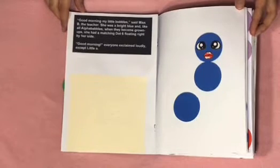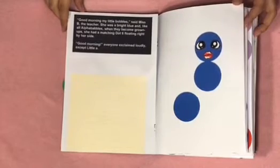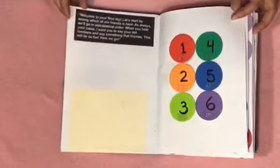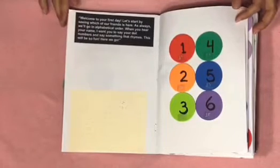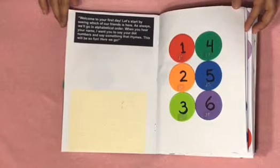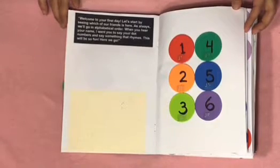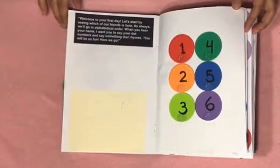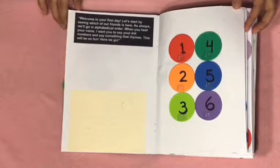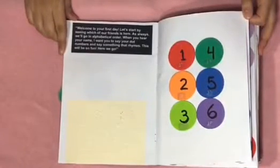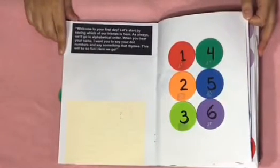Here we have Miss B standing in front of the class. Welcome to your first day. Let's start by seeing which of our friends is here. As always we'll go in alphabetical order. When you hear your name I want you to say your dot numbers and say something that rhymes. This will be so fun. Here we go. Here we have the six dots of a braille cell. Each one is labeled with its dot number.